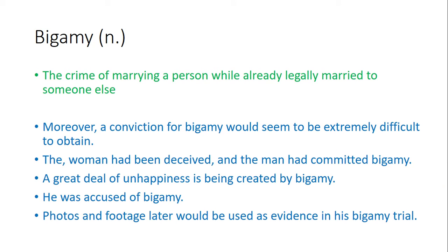Bigamy — it's a noun meaning the crime of marrying a person while already legally married to someone else. Examples: Number one, a conviction for bigamy would seem to be extremely difficult to obtain. Number two, the woman had been deceived and the man had committed bigamy. Number three, a great deal of unhappiness is being created by bigamy. Number four, he was accused of bigamy. Number five, photos and footage later would be used as evidence in his bigamy trial.